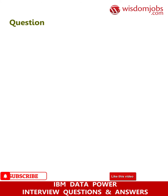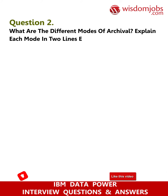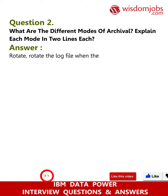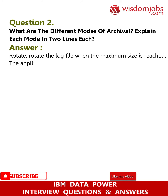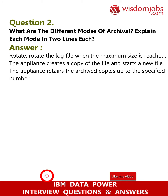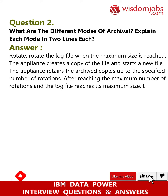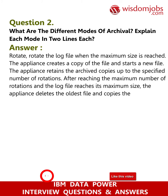Question 2: What are the different modes of archival? Explain each mode in two lines. Answer: Rotate — rotate the log file when the maximum size is reached. The appliance creates a copy of the file and starts a new file. The appliance retains the archived copies up to the specified number of rotations. After reaching the maximum number of rotations and the log file reaches its maximum size, the appliance deletes the oldest file and copies the current file.